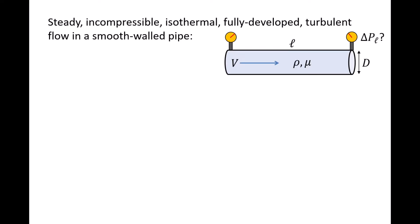One example that we've covered extensively is how to find an expression for the pressure drop per length of pipe, delta PL, for a system where there is steady, incompressible, isothermal, fully developed turbulent flow through a smooth-walled pipe. We deduced that delta PL is some function of the flow speed V, pipe diameter d, fluid density rho, and the fluid's absolute viscosity mu.